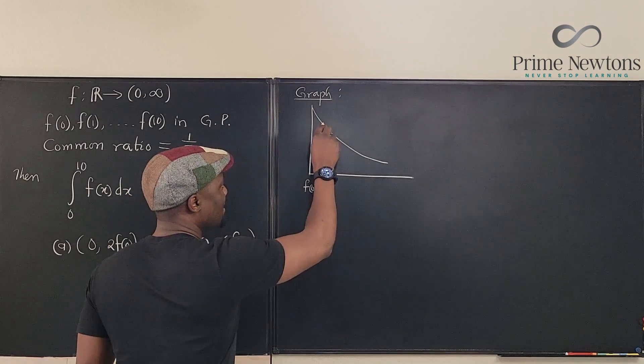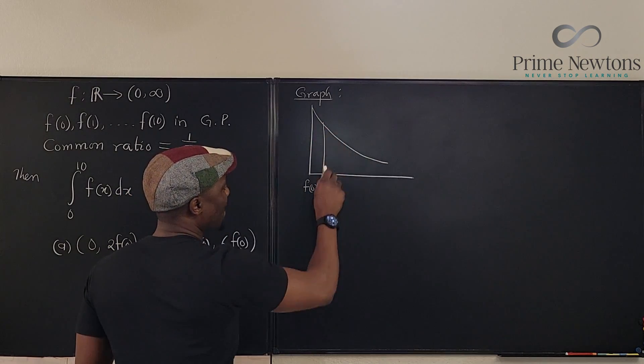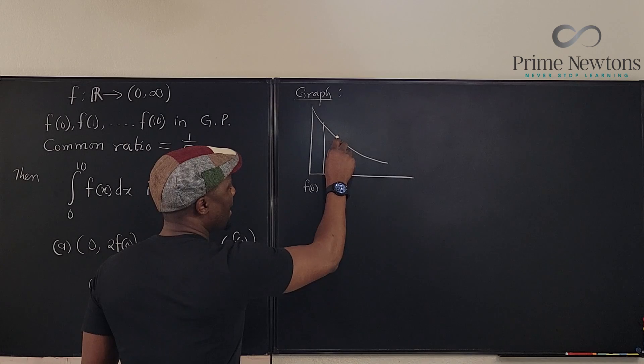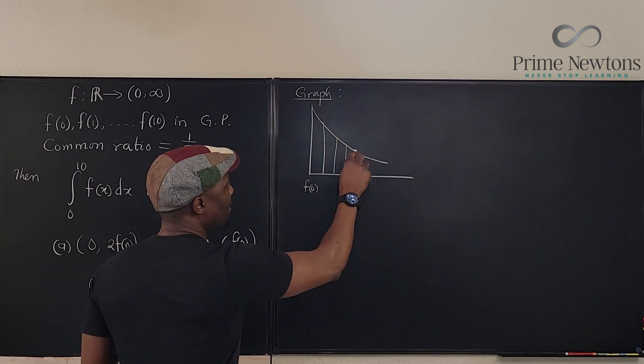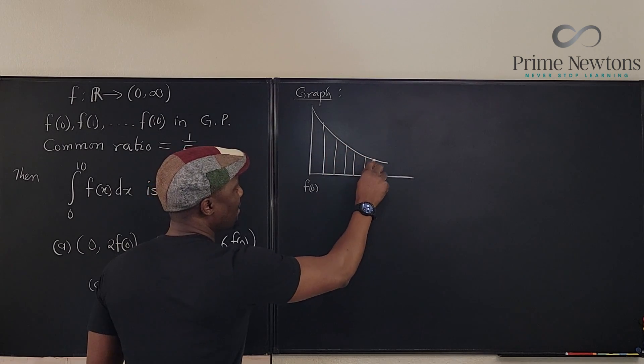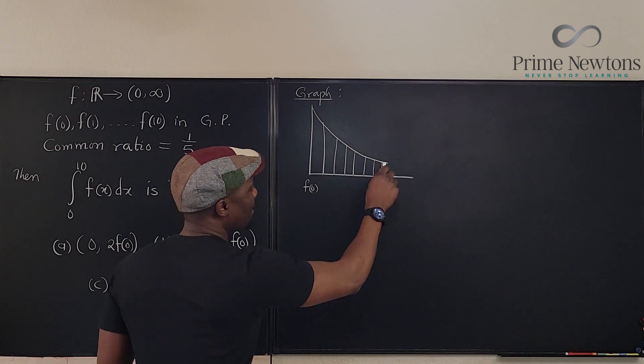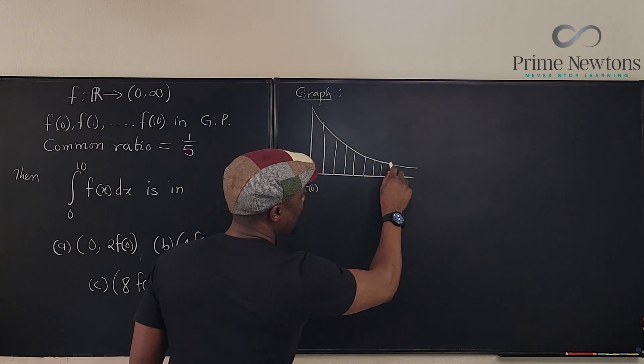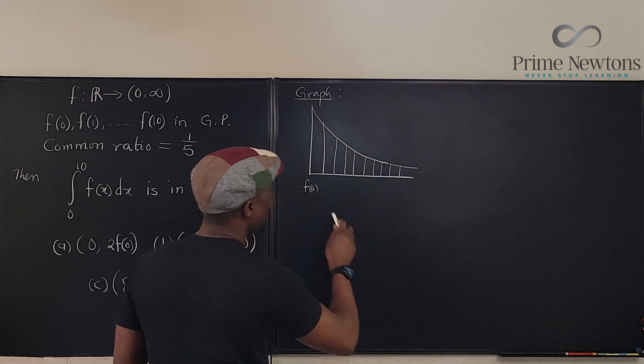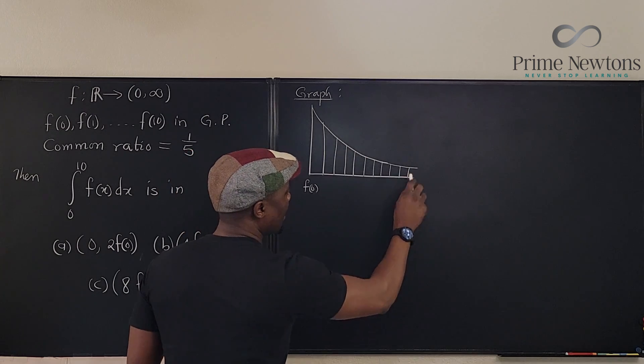The graph may not be as smooth as this, but it's a geometric progression getting smaller and smaller. The very first term f(0) is gonna be here, then you're gonna have f(1), f(2), f(3) like that. So let's assume we cut this this way: f(1), f(2), f(3), four, five, six, seven, eight, nine, ten I think.